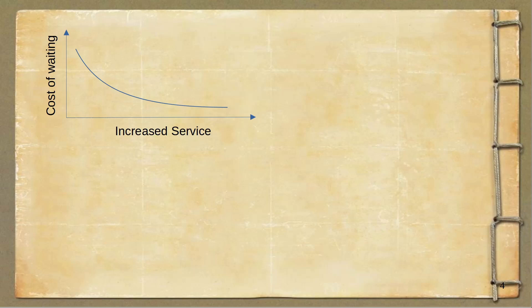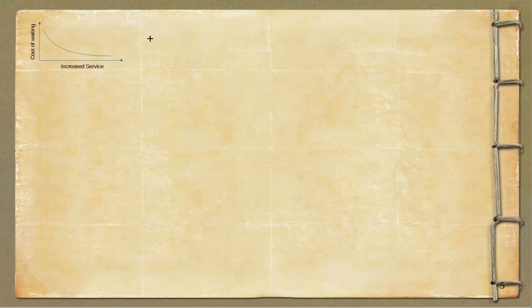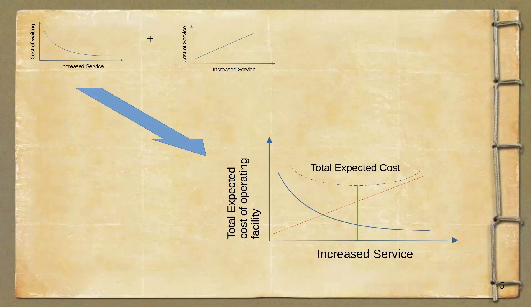As we can see, whenever we increase the service - whenever we increase the people who give service - the cost of waiting naturally goes down. But as you increase the people who give service and add more service stations, the cost of service will also go up because you are employing more people and building more assets. If we add these two costs up, what we get is total expected cost for operating the facility, and as you can see the total expected cost has a minima. This is the optimal cost we are trying to achieve when we apply queuing theory in operations research.